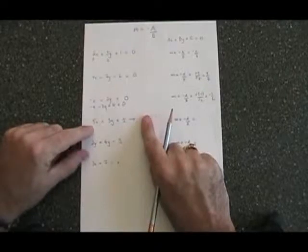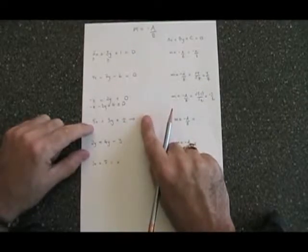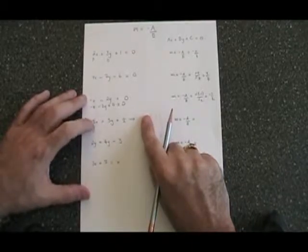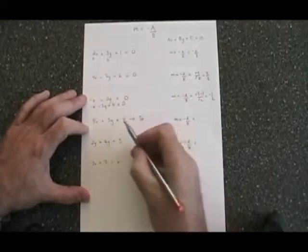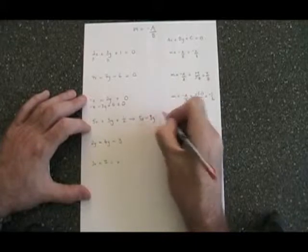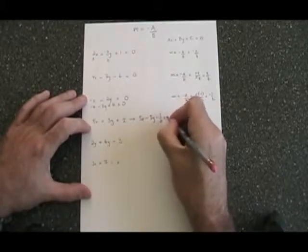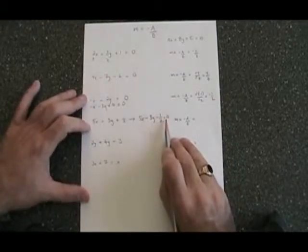This equation is not in the form ax plus by plus c equals zero. So I'm going to use algebra to move it into that form. The x term is already to the left of the equal sign, so I'm keeping it where it is, five x. The three y, when it moves to the other side, becomes minus three y. The one-half becomes minus one-half equals zero. Don't forget to write your equal zero. The equations have to have equal signs.